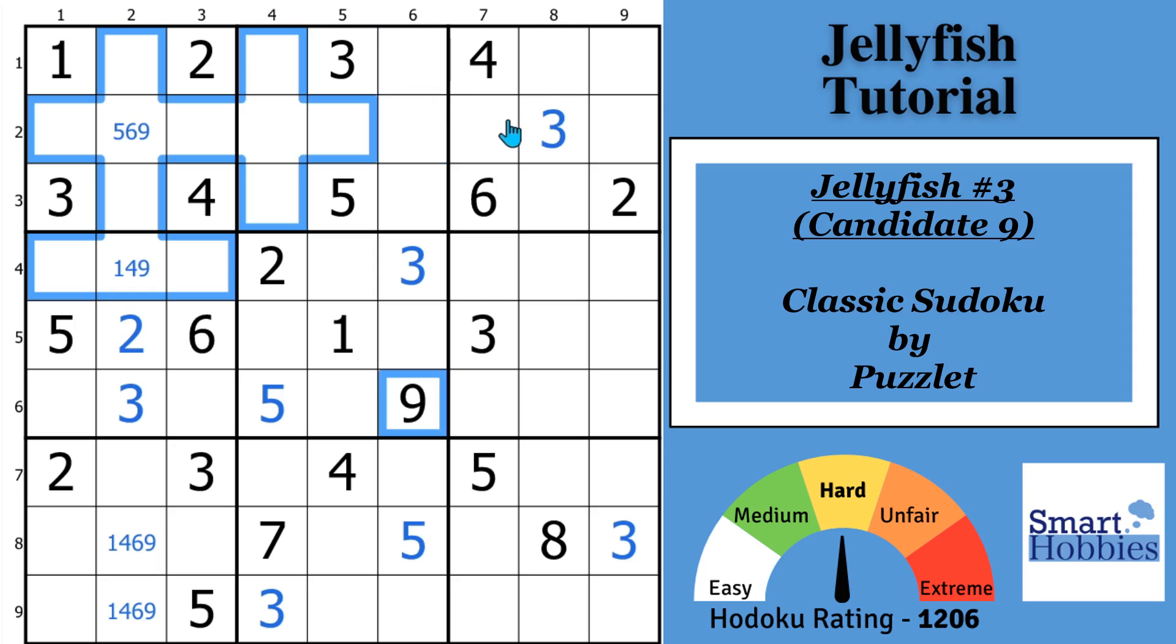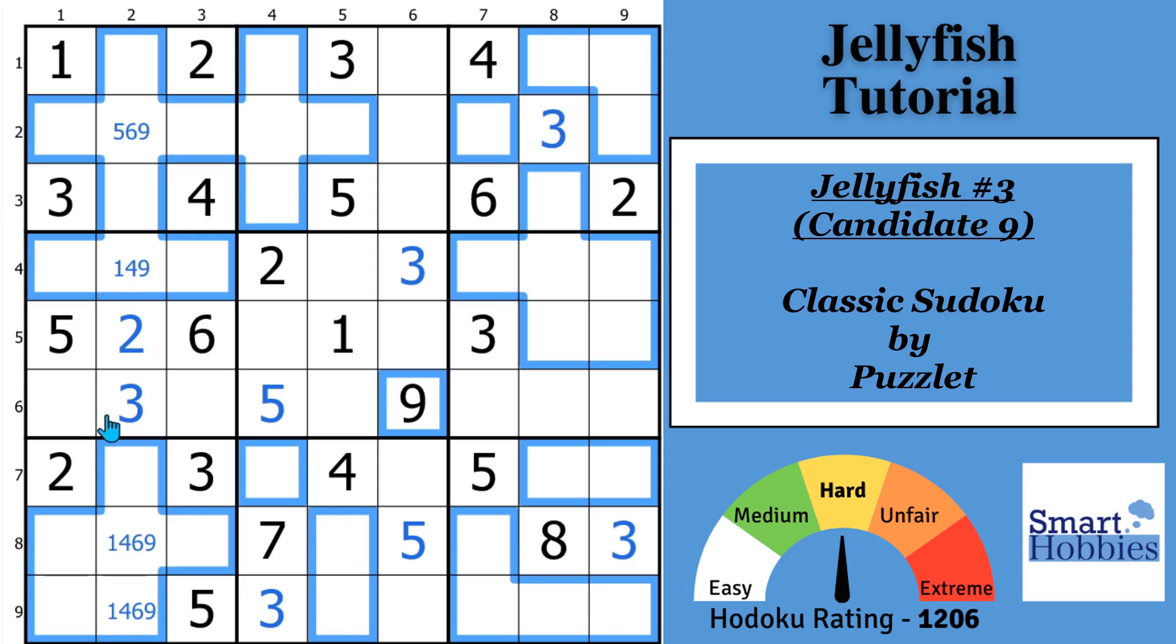Well, they can't be here because we already have a 9 right there. And I tend to go back and just check where I made the color markings. So I don't over or under mark. Which could be a problem. Alright, get rid of that 9.